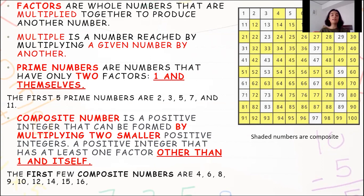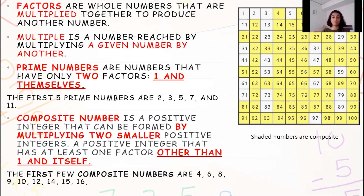Similarly, with 11, only 1 into 11 gives you 11. There are no other factors of 11. So 11 is a prime number since its only two factors are 1 and 11, that is the number itself.